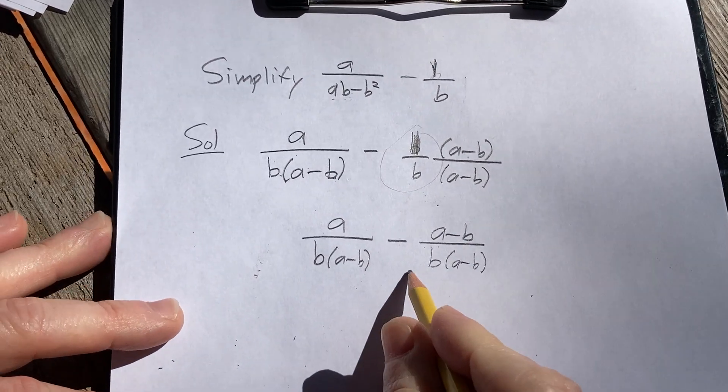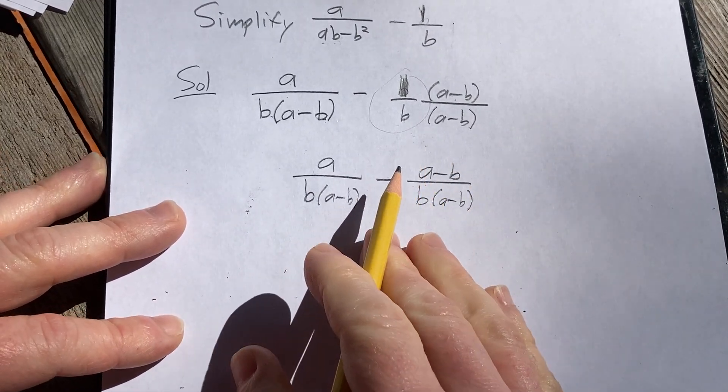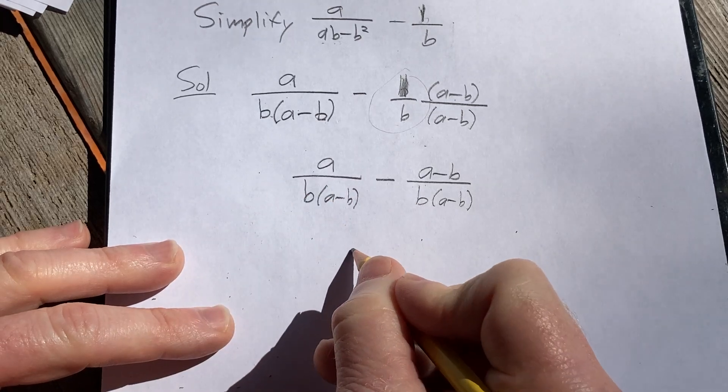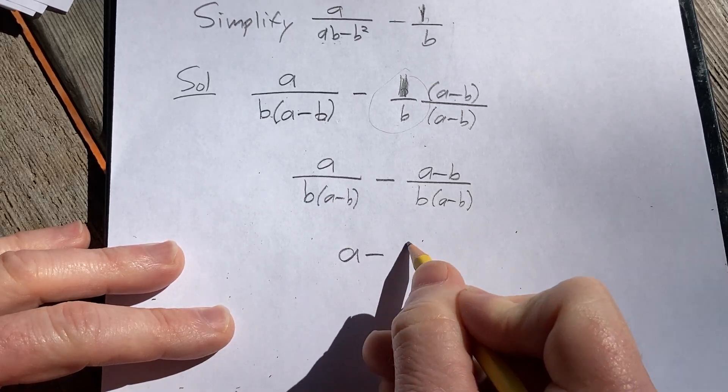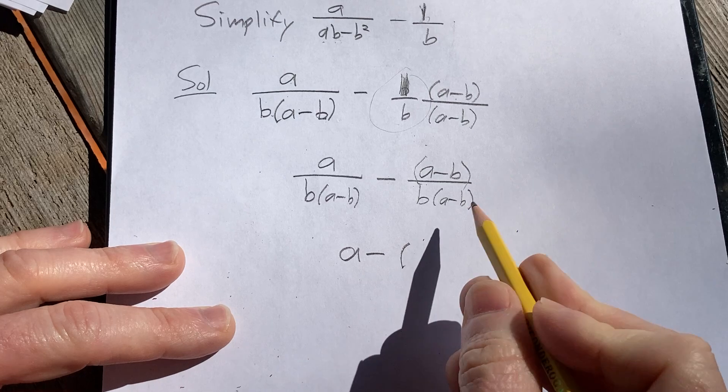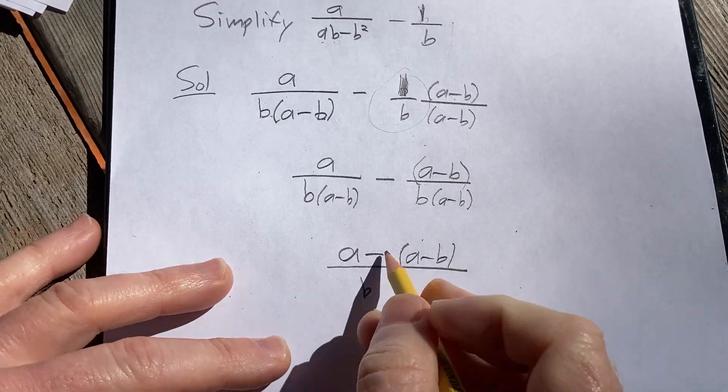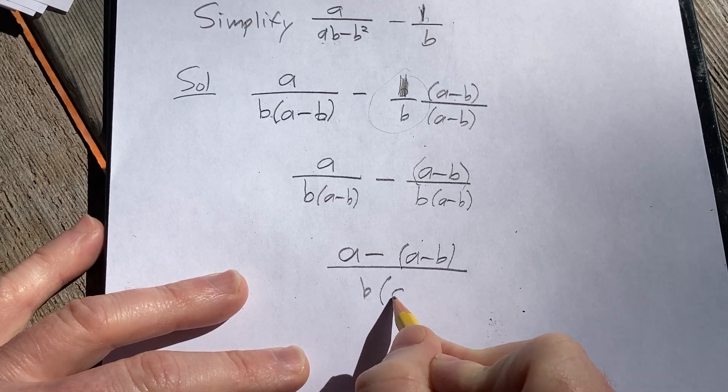So now we have the same denominator, so we're allowed to subtract the fractions and write them over this common denominator. So this will become a minus parentheses, right, this is one term, a minus b, over b times parentheses a minus b.